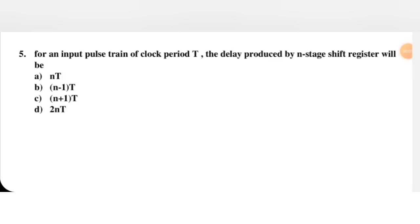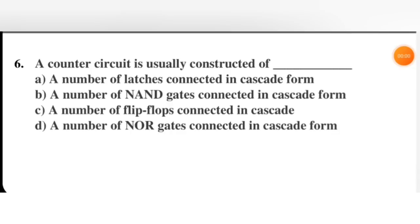Next question: for an input pulse stream of clock pulse period T, the delay produced by an n-stage shift register will be — an n-stage shift register has n flip-flops. The total delay equals the number of flip-flops multiplied by T, so total delay equals n into T. A is the right option.